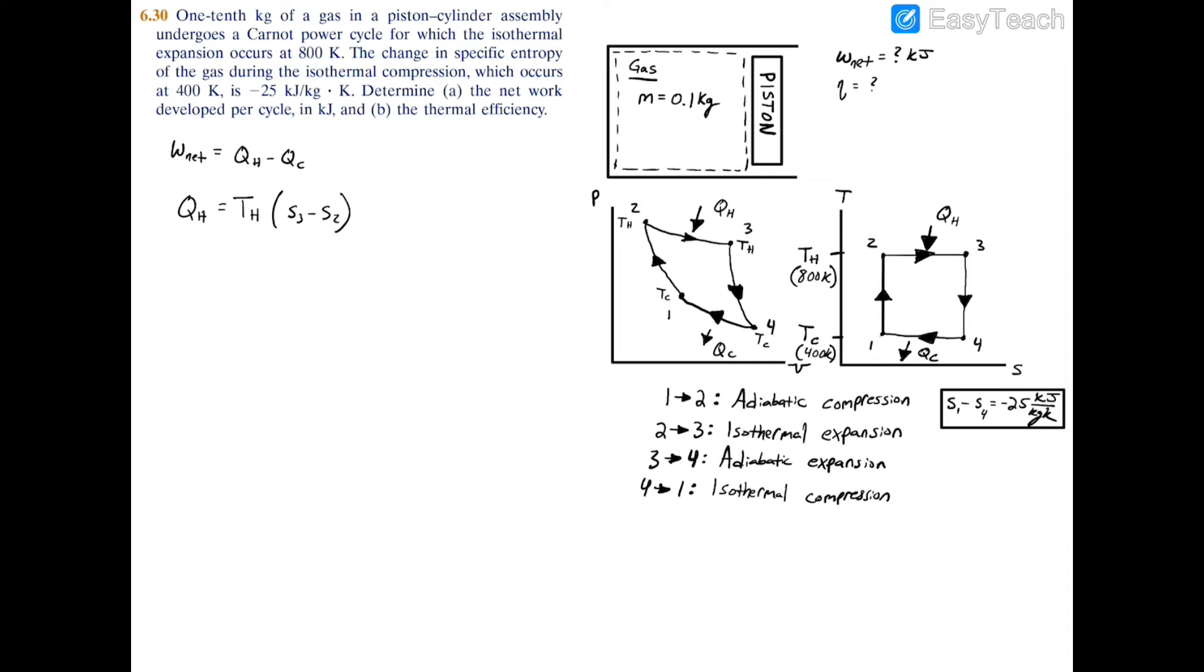Now if we plug in what we have, Q_hot = T_hot = 800 K. For S3 - S2, we're not specifically given these values, but we have S1 - S4 = -25.